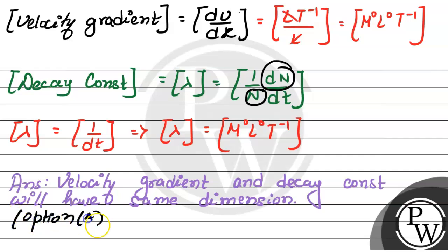Option A is correct. The final answer to this problem is that velocity gradient and decay constant have the same dimension, and the correct option is A. I hope the solution is clear to you. Thank you and best of luck.